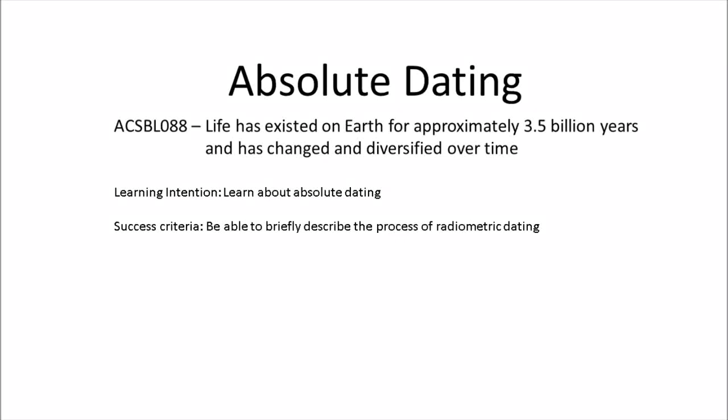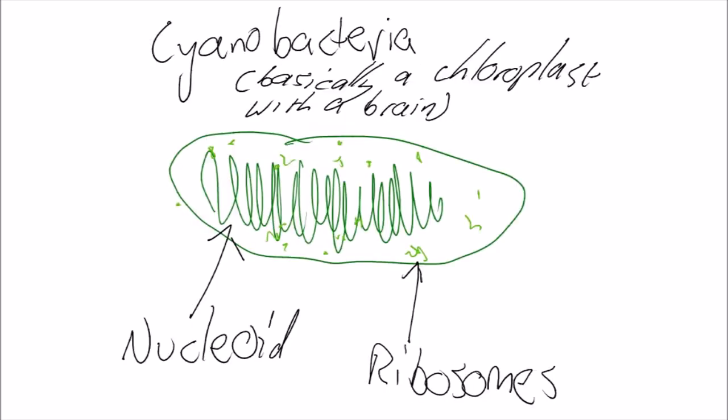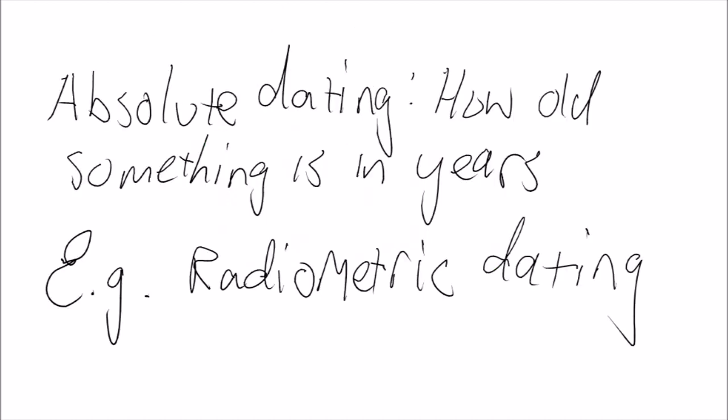Moving on from the last video, we're going to be talking about fossils and how we date them. If you remember from the last video, the oldest fossil that's been found so far is of a cyanobacteria. This fossil has been dated to be about 3.5 billion years old, but how did we get that number?